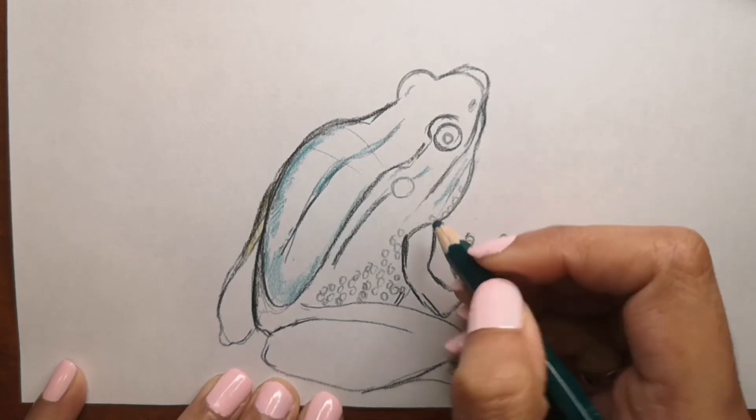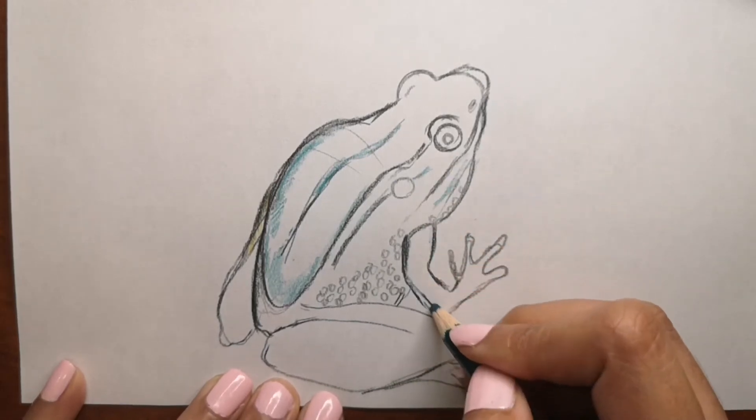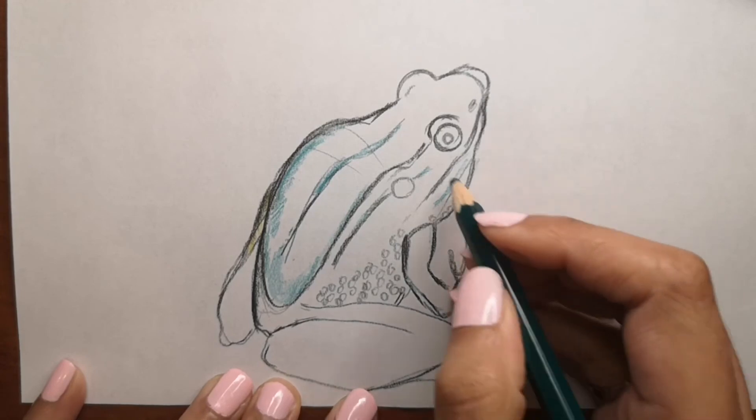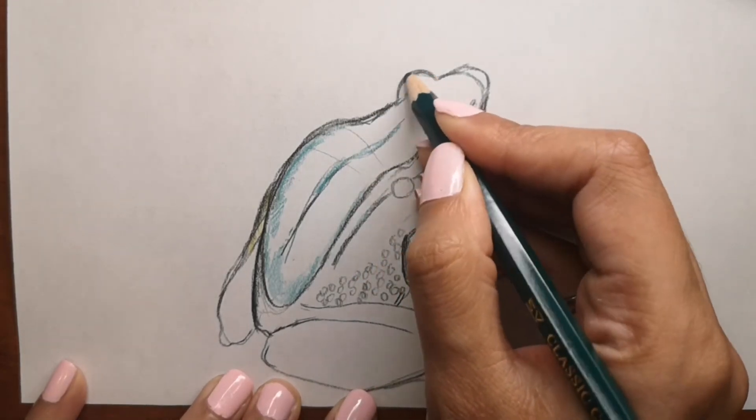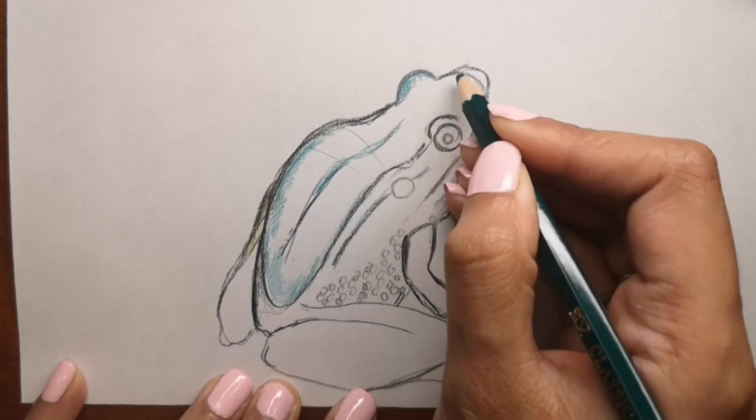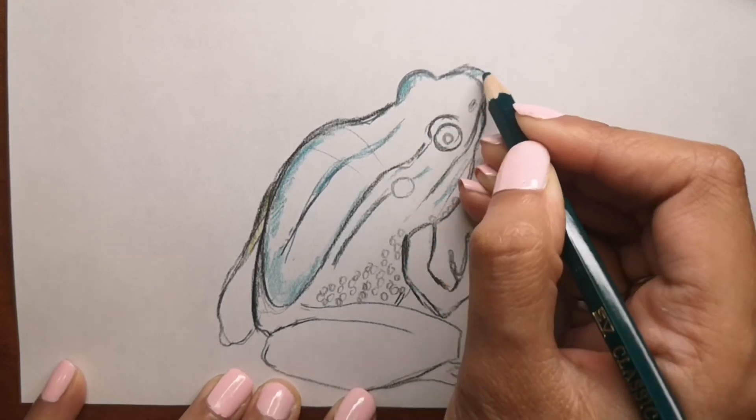They have vocal sacs which fill with air and can amplify the sound up to a mile away. You've probably seen, maybe even in cartoons, that frogs have that sac-like thing that blows out when they make that sound.